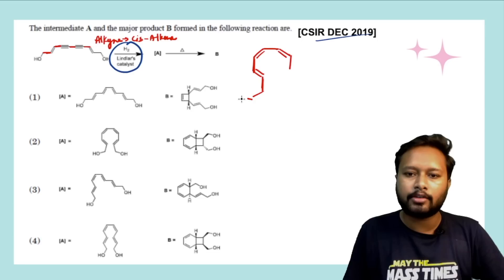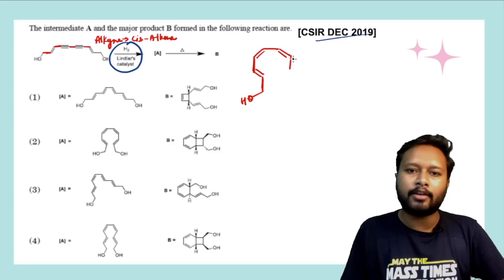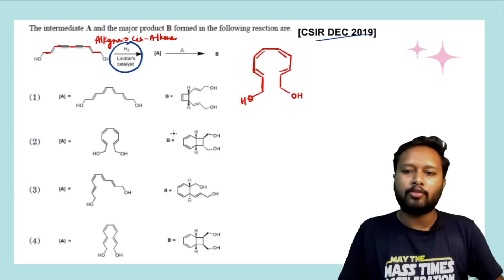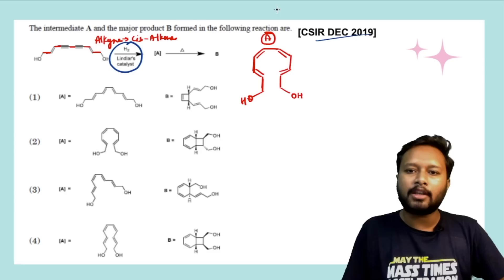Similarly, you will be having double bonds on the other side because here again this is E, along with these two sigma bonds. This goes like this and then you have the OH. You can check in the options which compound has similar properties. This is your compound A.